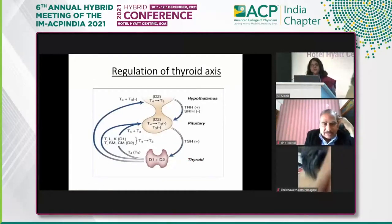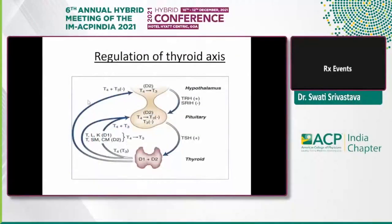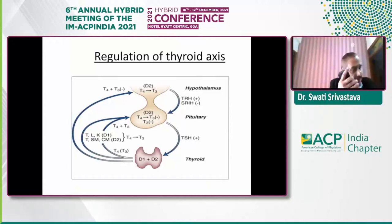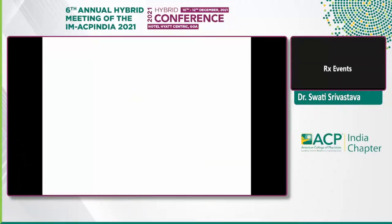As we know, the regulation of the thyroid axis involves the hypothalamus, pituitary, and thyroid. The entire hypothalamic-pituitary-thyroid axis is responsible for the equilibrium of thyroid hormones, which affect so many metabolic and important functions throughout the entire body — and that is what we test when we do the thyroid function test.